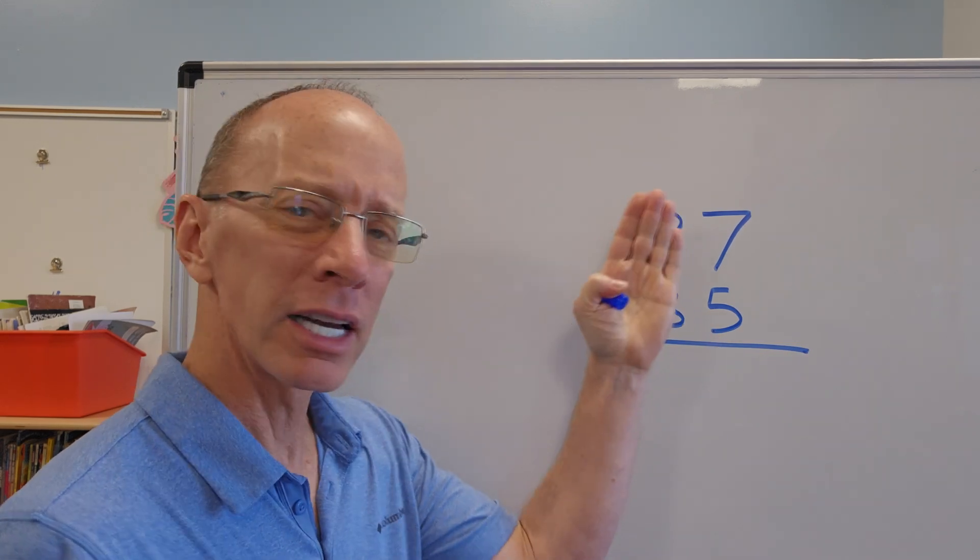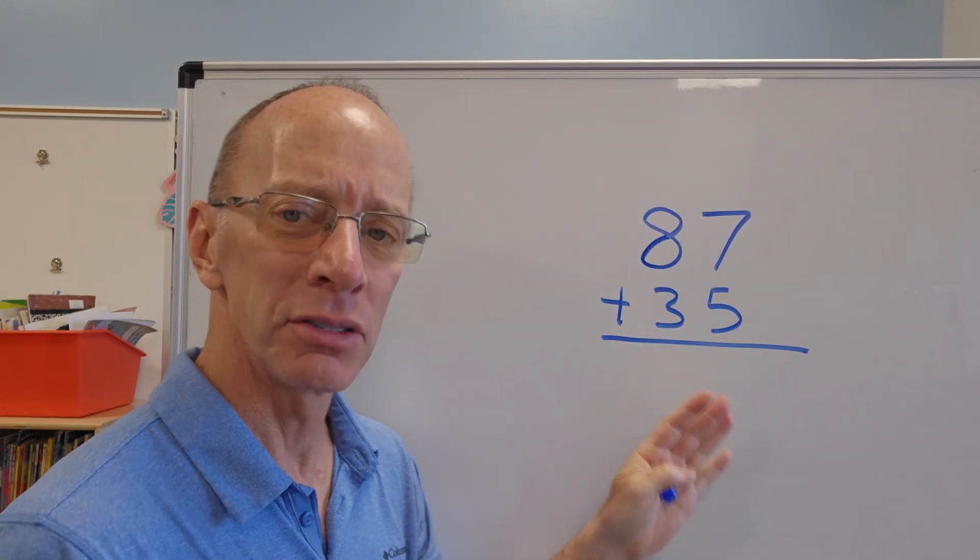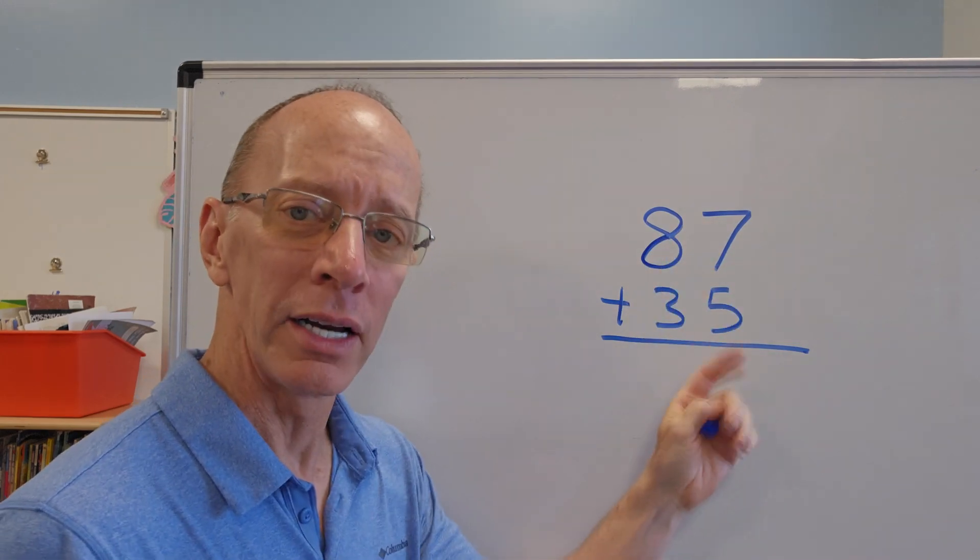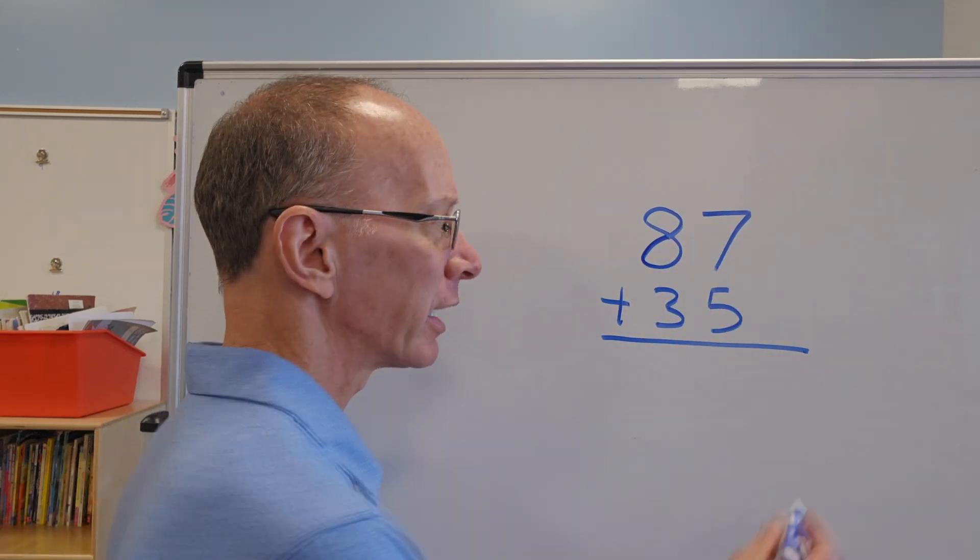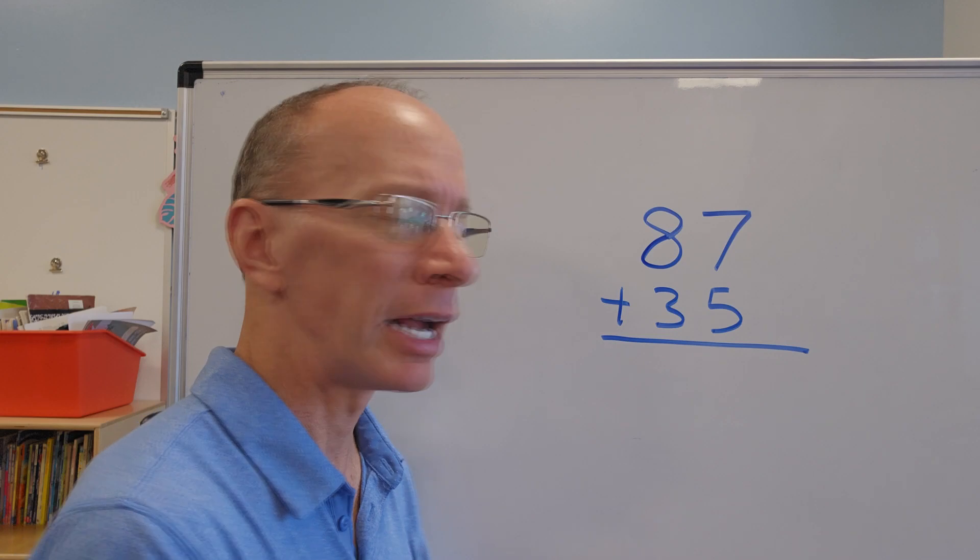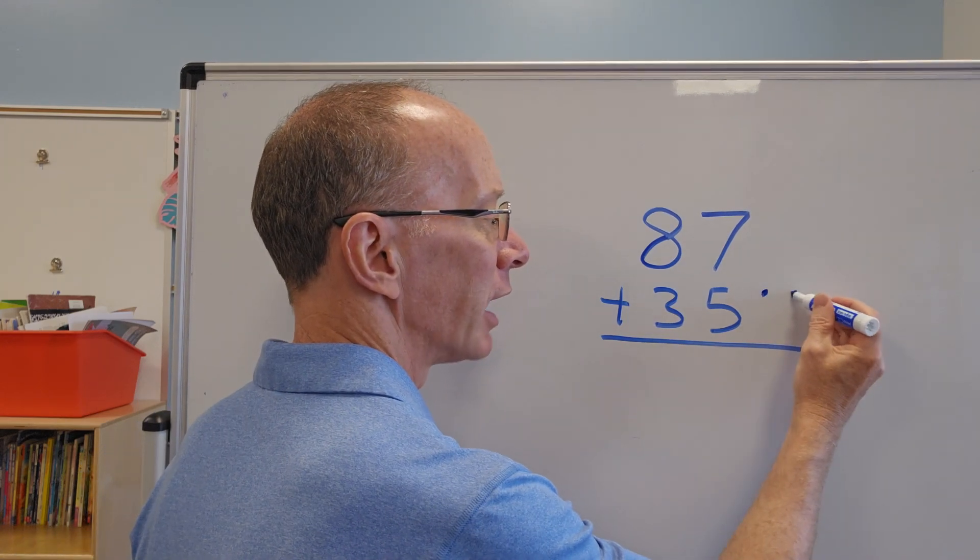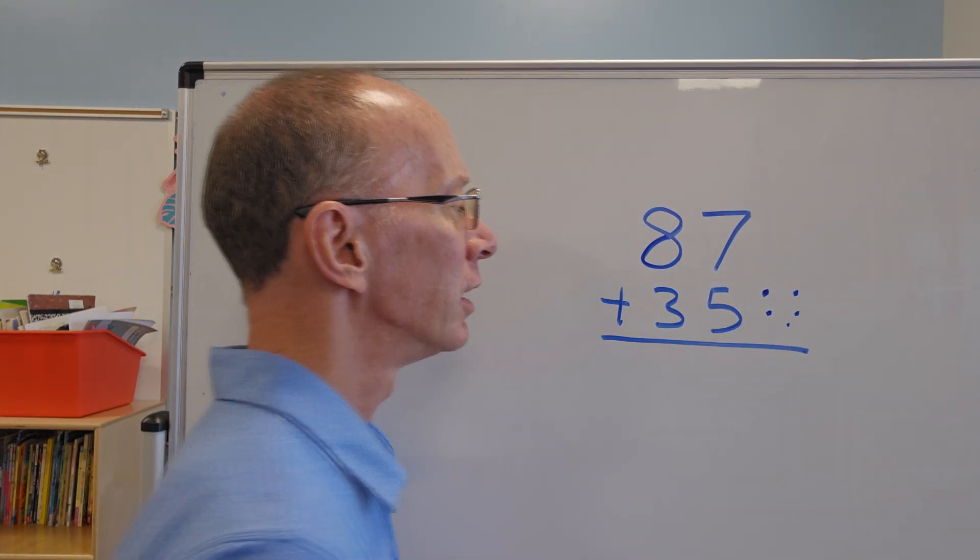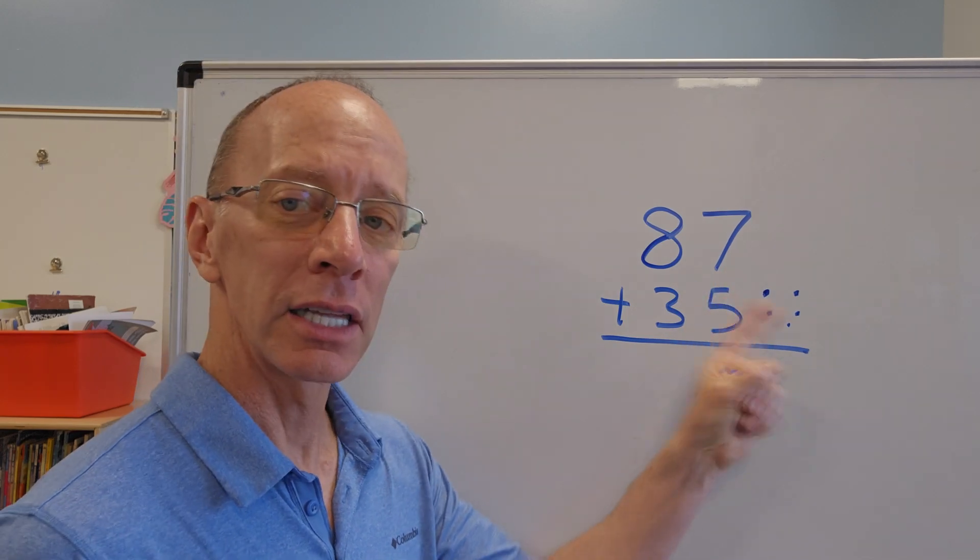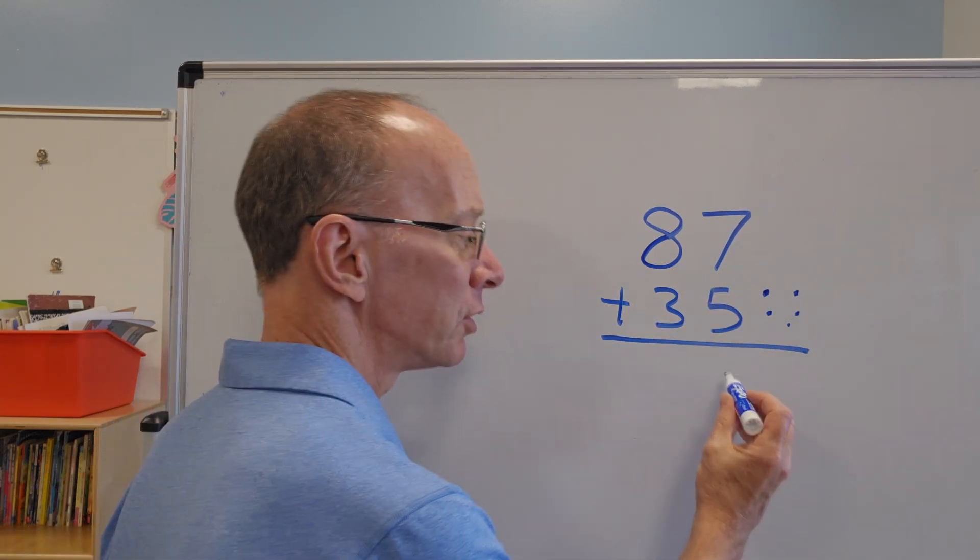So I have 87 plus 35. Add the ones first. Right now, I'm not going to cover that up. I'm thinking I can do it just this way. 7 plus 5. Again, if you're not sure on that big number, adding that up, you can always put little dots right here representing the 5. So I have 7, 8, 9, 10, 11, 12. So I put the 2 right here.